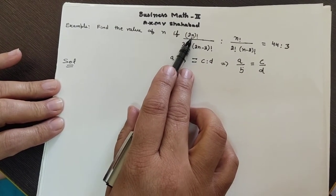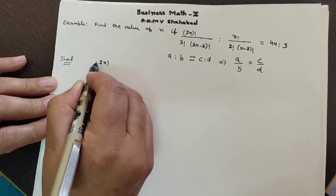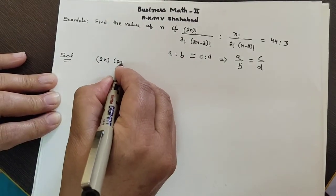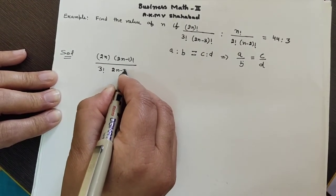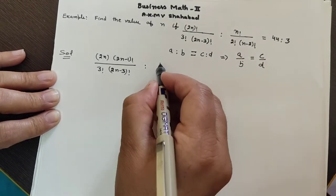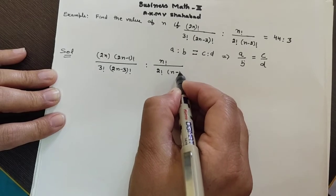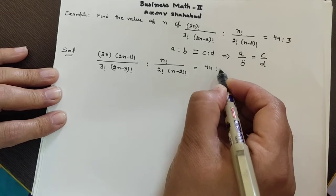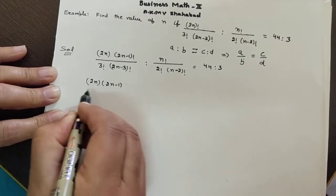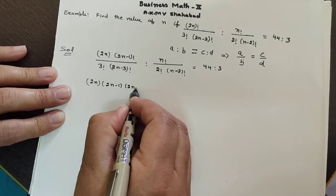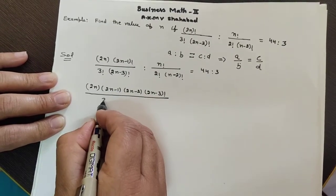Applying the formula to (2n)! by considering capital N = 2n: (2n)! = 2n·(2n-1)!. Then applying again: (2n-1)! = (2n-1)·(2n-2)!, and further: (2n-2)! leads into (2n-3)!. So (2n)! expands as 2n·(2n-1)·(2n-2)·(2n-3)! divided by 3!.